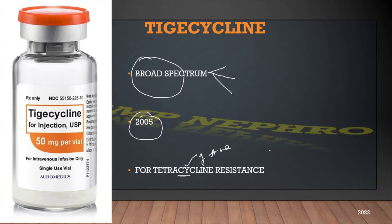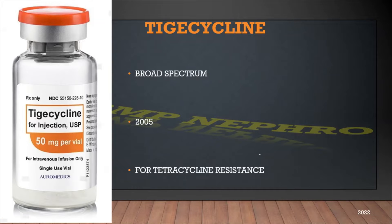Usually, tetracycline resistance occurs because of the efflux pump or a change in the ribosomal proteins. During that time, tigecycline came as an alternative for gram positive organisms having resistance to tetracycline, and those groups of infections have responded well to tigecycline.